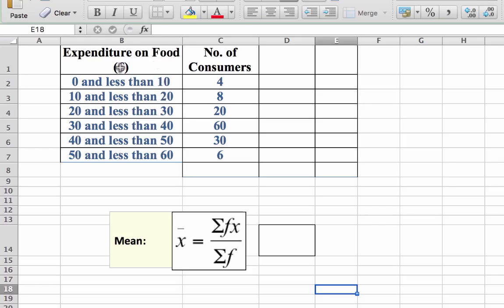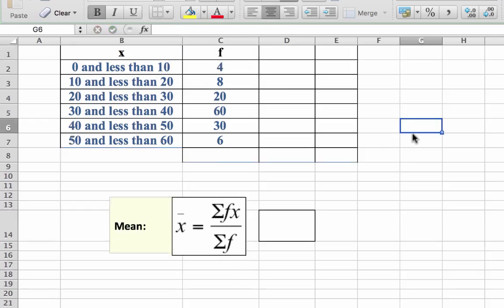So I'm going to replace that heading expenditure on food with the letter x. The second column on your frequency distribution table is your frequency. So again, I'll replace that with f. And now we've matched up the headings with what's in the formula, the sum of fx over the sum of f.